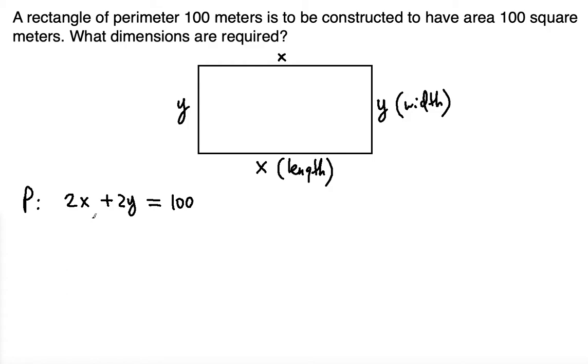Now the next part is the area. The area is found by multiplying the width times the length, so x times y. x times y is the product which is equal to 100.